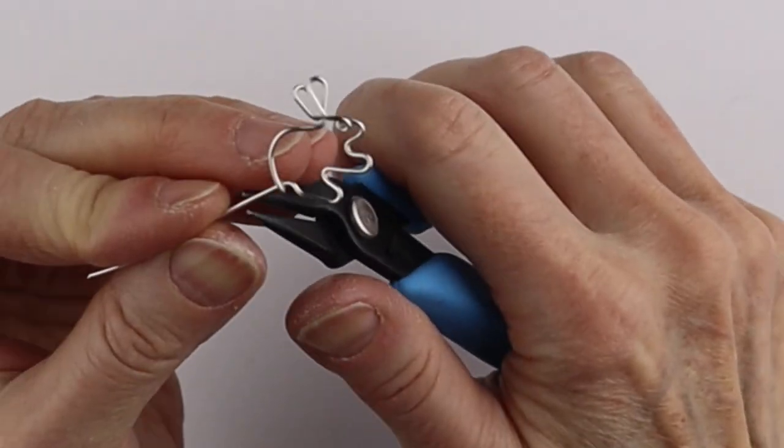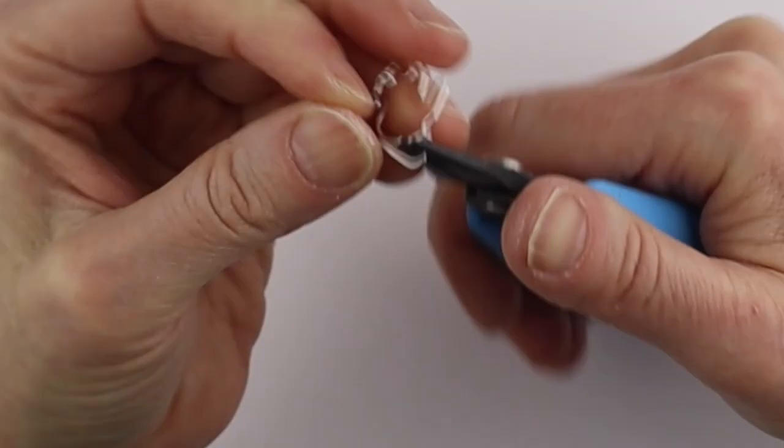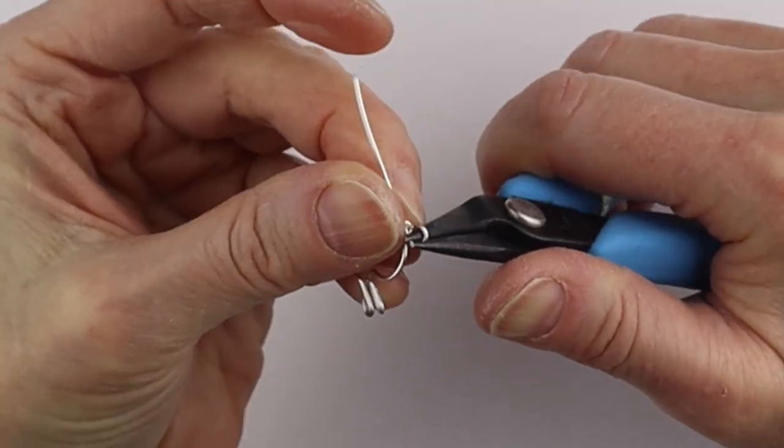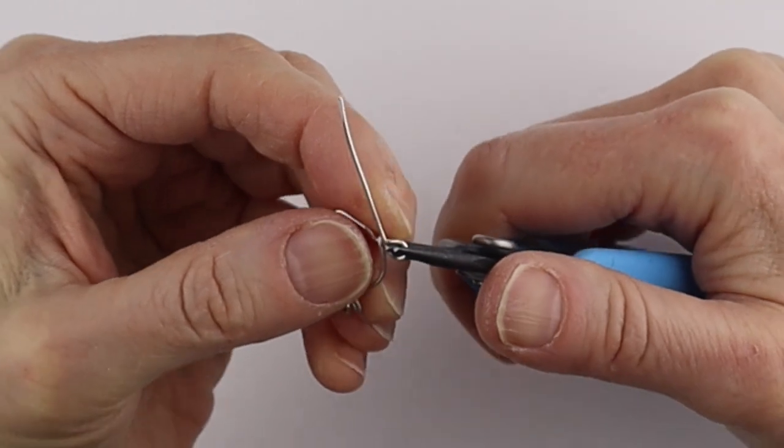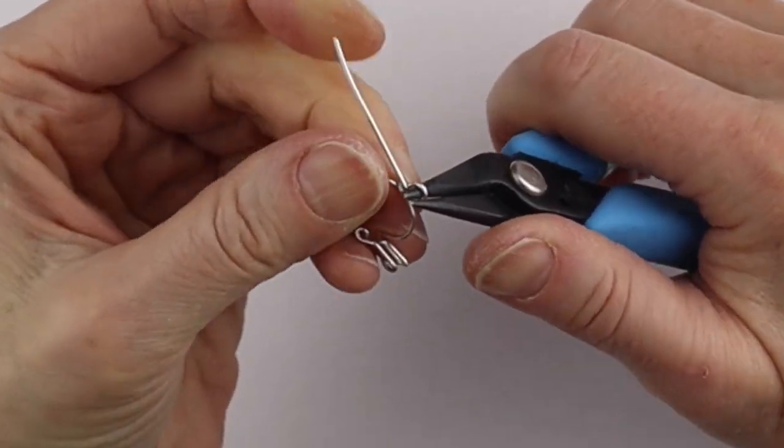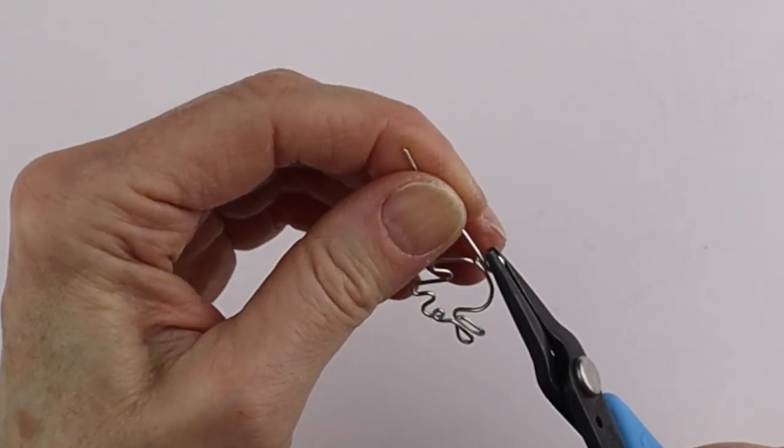Give it a good little pinch so it holds and then round pliers again to make the tail. Bring it right around to form a nice little circle and just adjust it how you need.